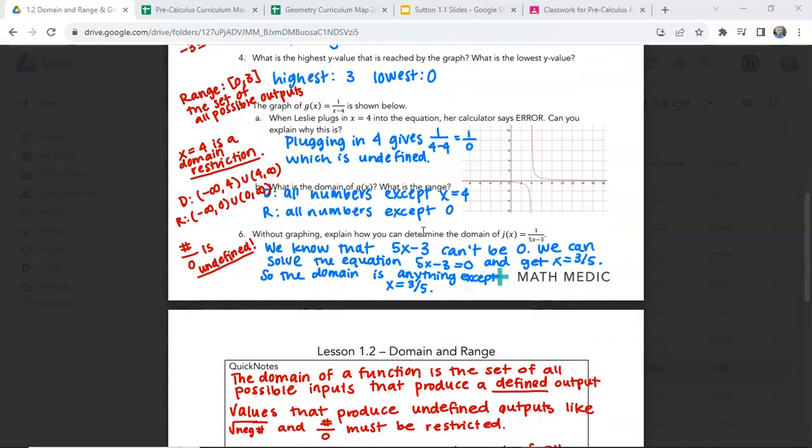Without graphing, can you determine the domain of 1 over 5x minus 3? We know that 5x minus 3 can't be 0. So we can solve the equation by setting it equal to 0 and then solve for x. So that tells us that we know that 3 fifths can't be in our domain because when we plug that in, that gives us a 0 in the denominator.